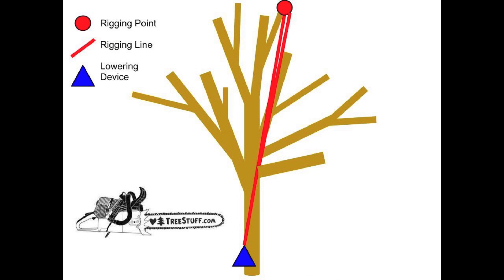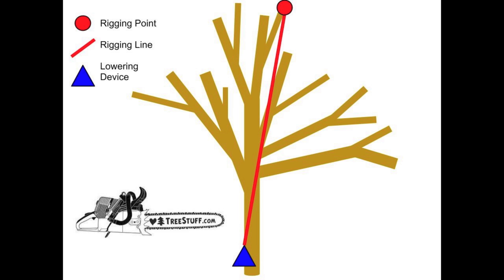This process is repeated with each piece until the limb is completely removed. Let's cut the same branch using a redirect. Another rigging point is added farther out in the canopy. The limb is then tied towards the butt and cut. This causes the limb to swing towards the center of gravity and away from the worker.